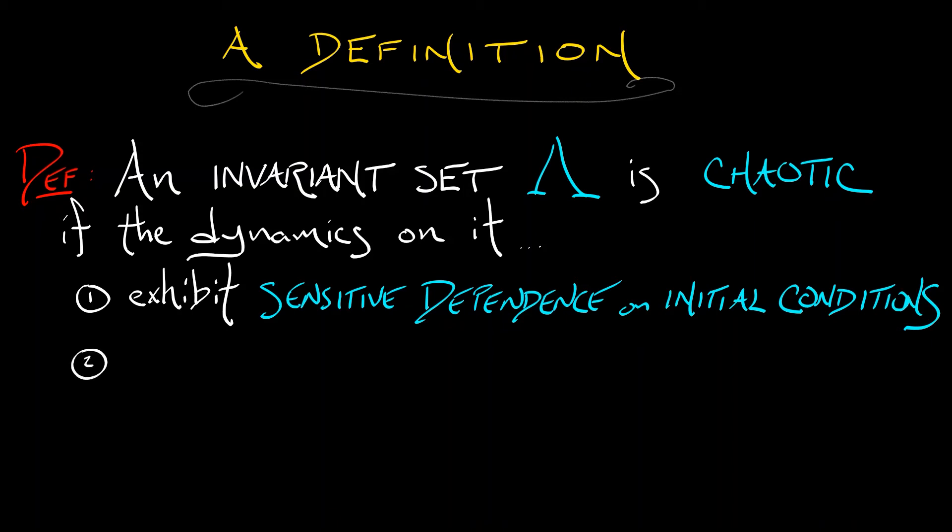Condition number two is that the dynamics have to be topologically transitive. That sounds cool. What does that really mean? What it means is that given any two points in that invariant set lambda, I can find an orbit that goes from one to the other.